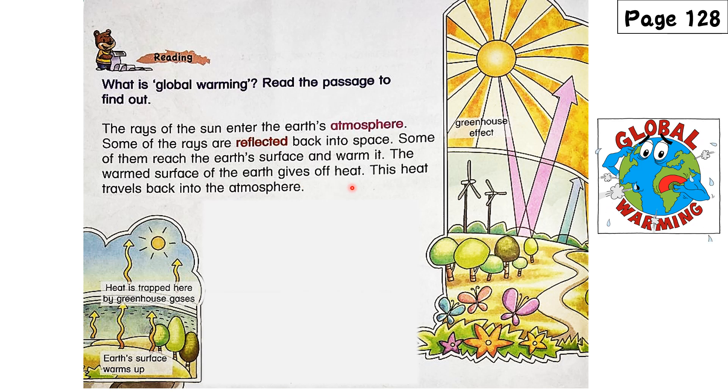The warm surface of the earth gives off heat. This heat travels back into the atmosphere. The rays of the sun enter the earth's atmosphere. Some rays are reflected back into space, and some reach the earth's surface to warm it.